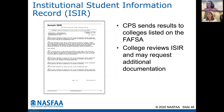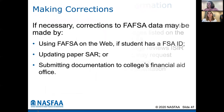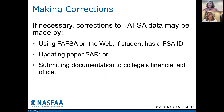The Institutional Student Information Record, or ISIR, is what the colleges receive. When we get that information from the central processing system, we will review it, request any additional documentation if you're chosen for the verification process, or we will begin to provide you with an award package. If you need to make corrections on your FAFSA, feel free to go on and correct it. If you're submitting documentation to the colleges for verification, please let the financial aid offices take care of the corrections — we will edit your FAFSA and correct it based on the information we have.